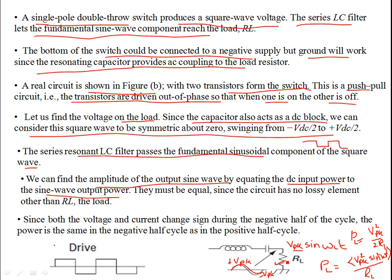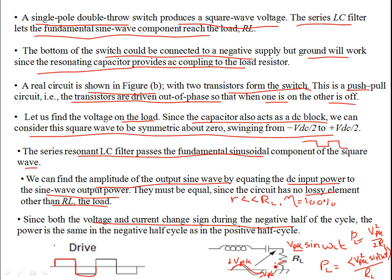If there is no other lossy element besides R_L — assuming the FET on-resistance r is much much less than R_L — and efficiency is 100%, then we neglect r. The only lossy element is R_L. Since both voltage and current change sign in the negative half cycle, and the current through the load is I = V_peak × sin(ω_L t) / R_L, the power remains the same in both half cycles.